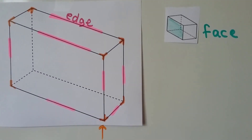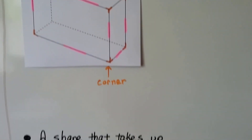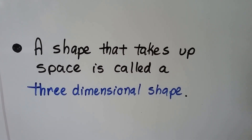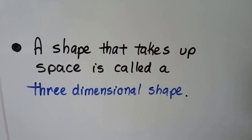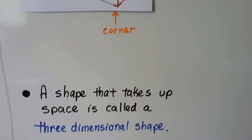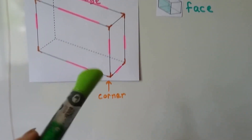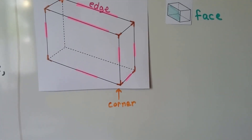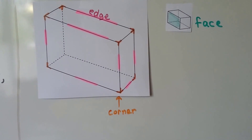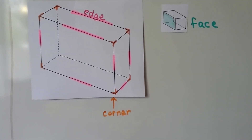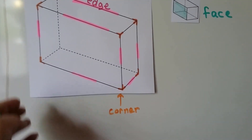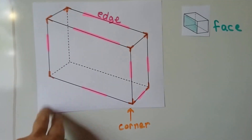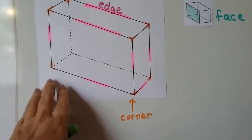A shape that takes up space is called a three-dimensional shape. It's got three dimensions: length, width, and height. A piece of paper is really thin — it just has a width and a length, so that's only two dimensions. It's flat, not thick.